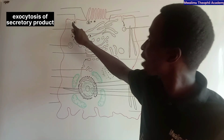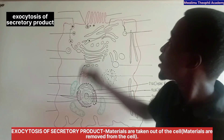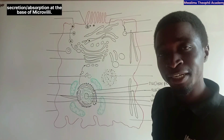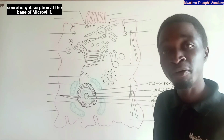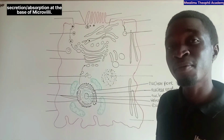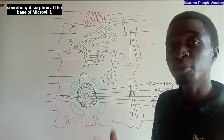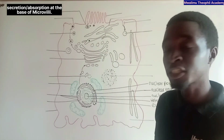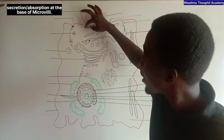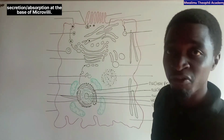This is exocytosis, meaning that materials are taken out of the cell. The last part shows secretion or absorption at the base of microvilli. Microvilli are microscopic membrane protrusions involved in absorption or secretion, and this illustrates the way materials are absorbed or secreted by these microvilli.